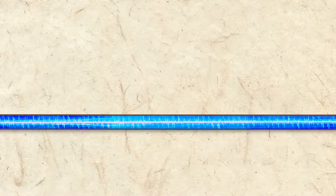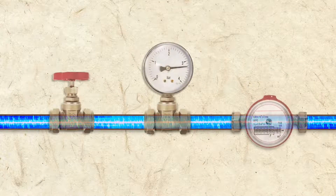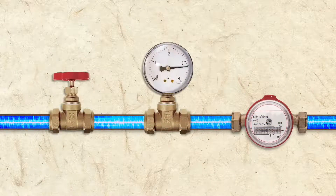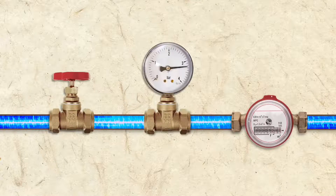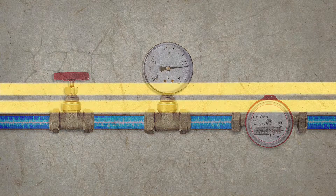To help explain how electricity flows through a wire, the analogy of water flowing through a pipe is often used. I'm a bike rider though, so I think of it more as a cyclist riding down the road.